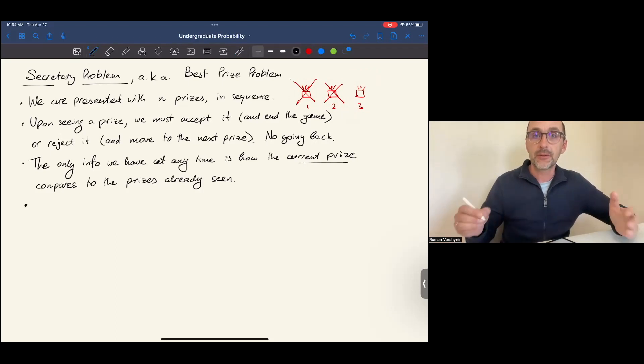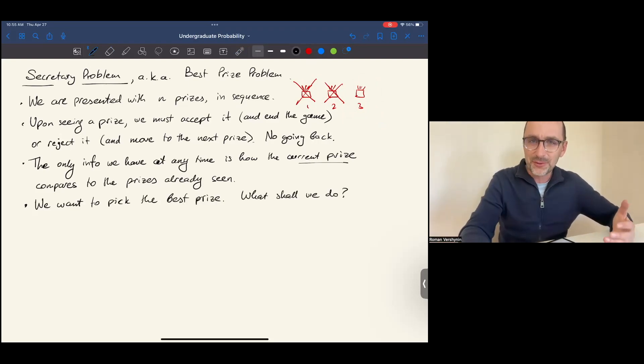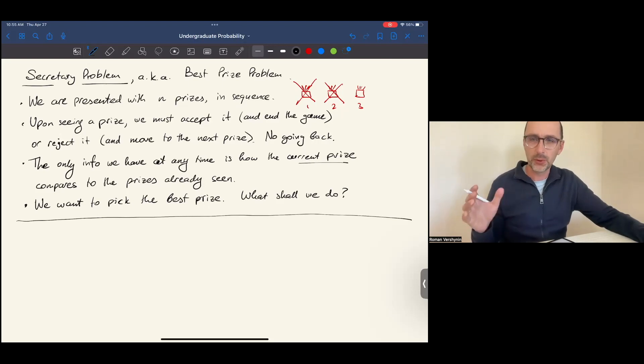We want to pick the best prize. What shall we do? What is the optimal strategy in this game? It is an open-ended problem. There could be many strategies. An almost optimal strategy, though, is the following one.